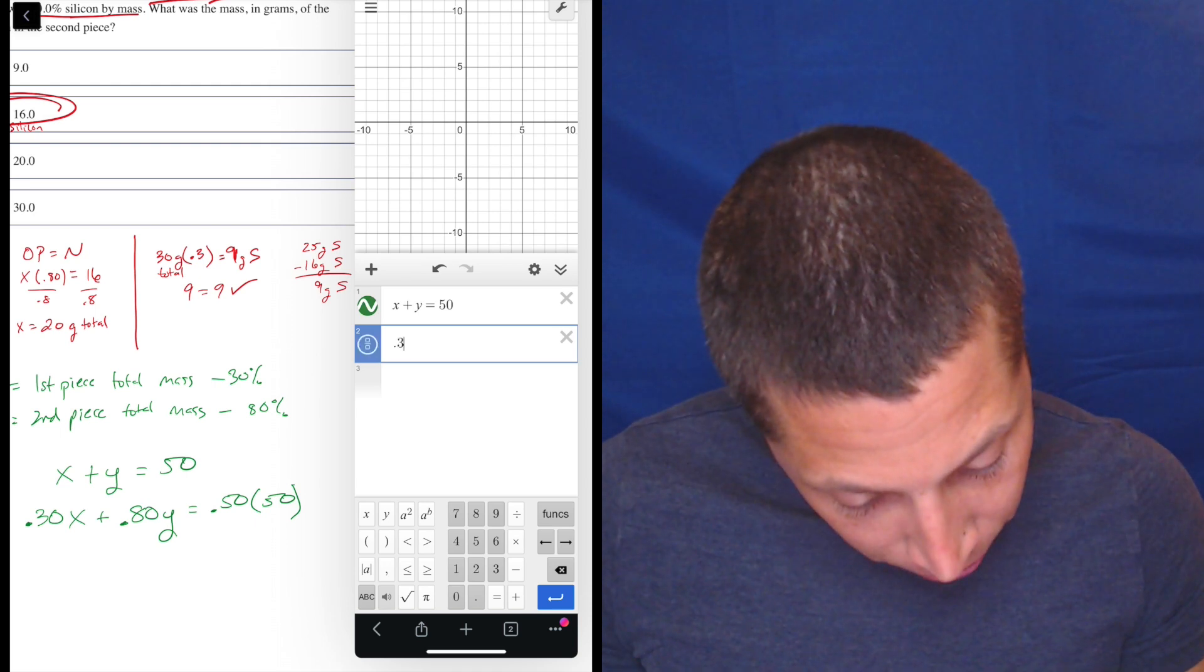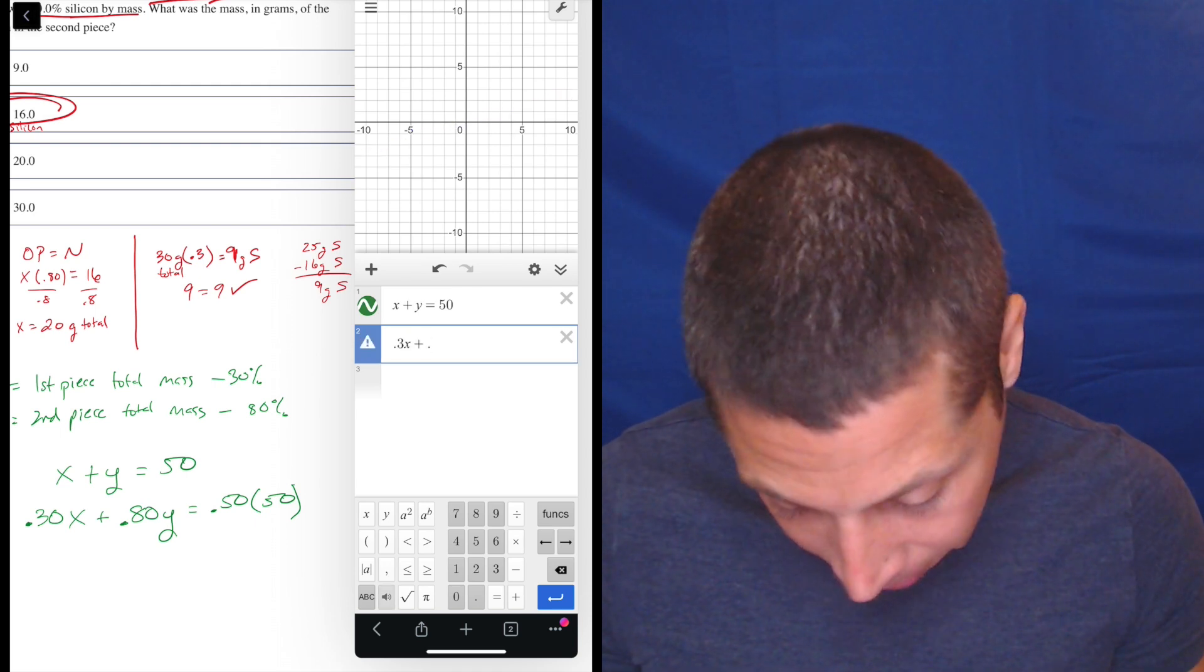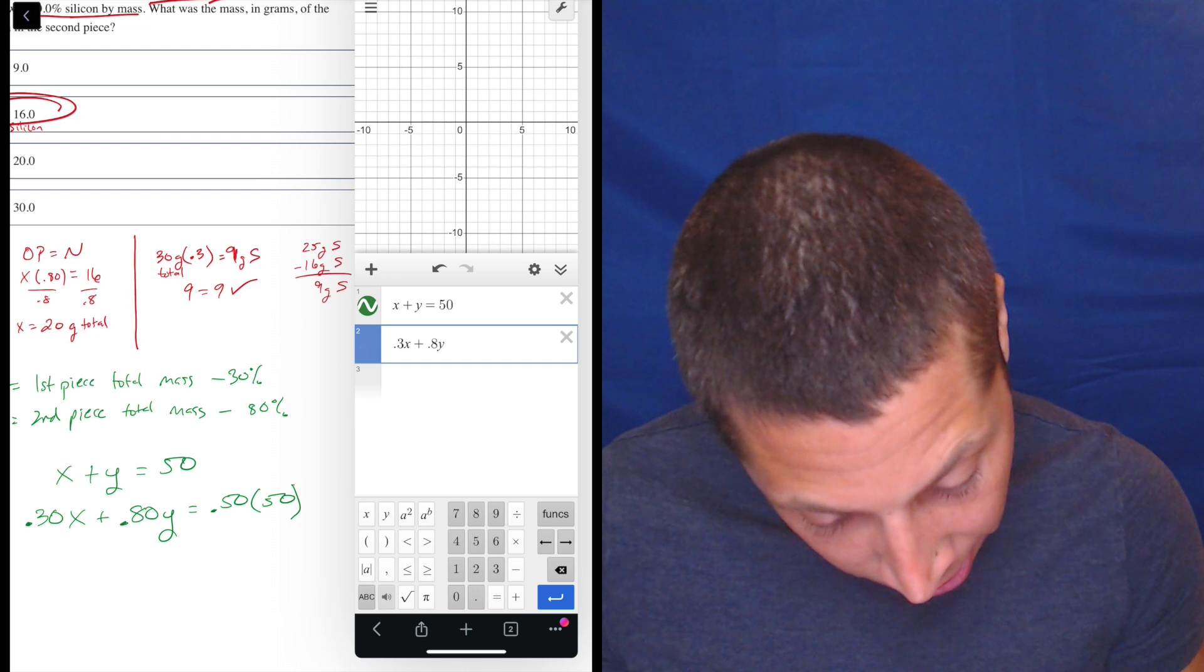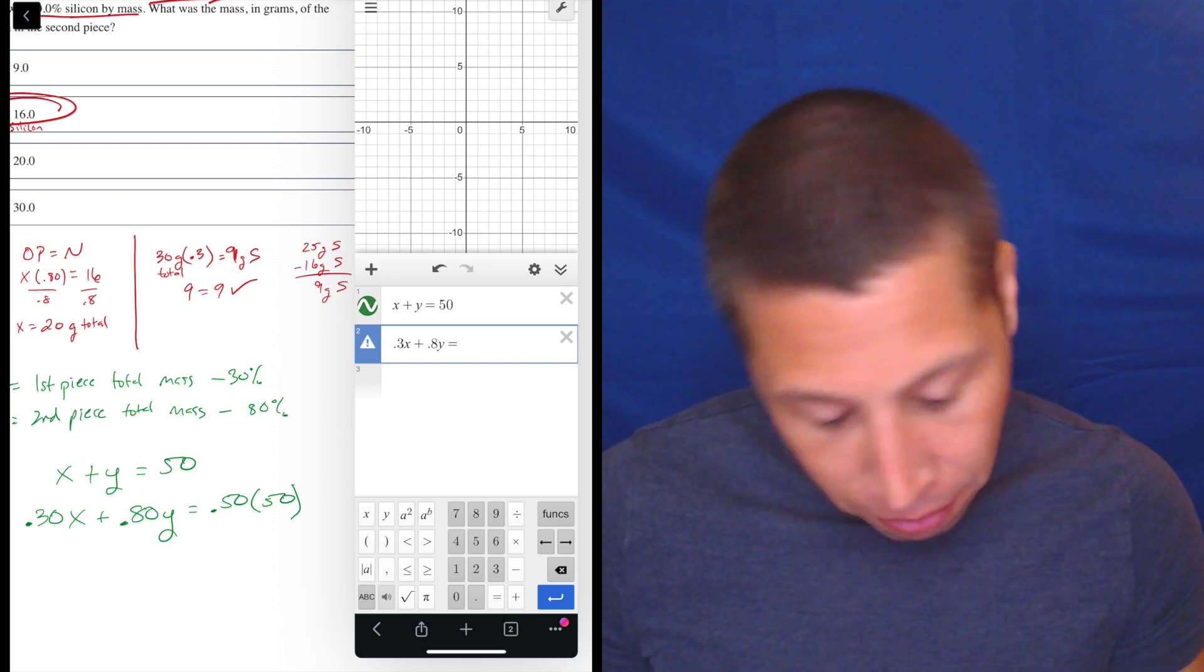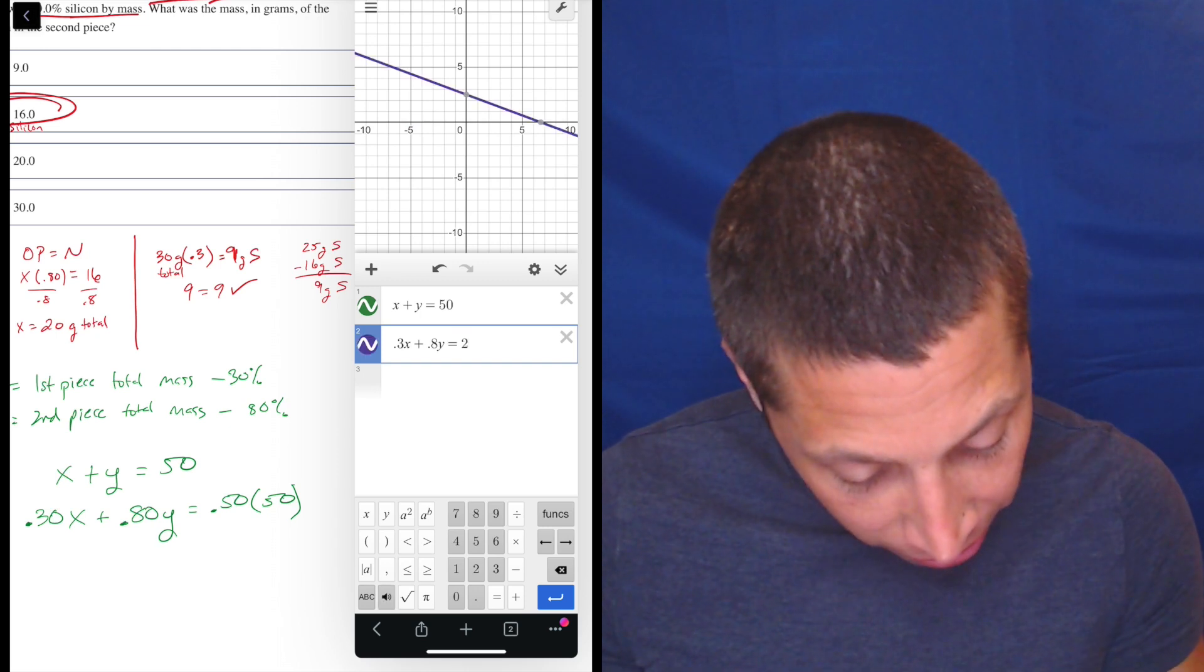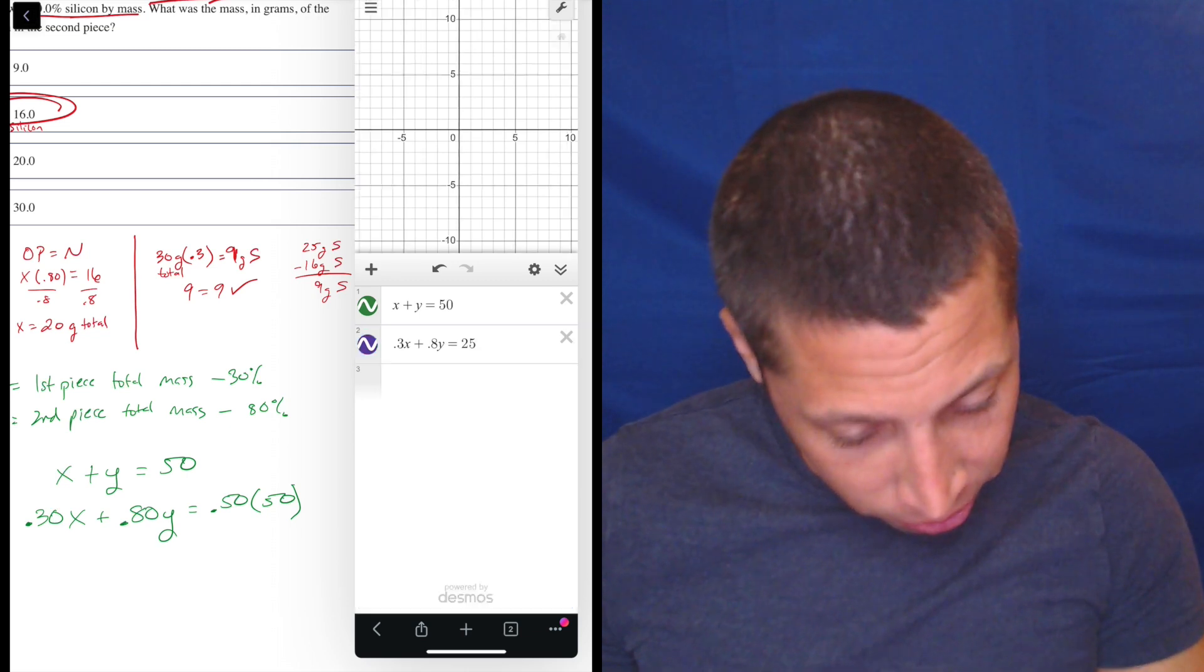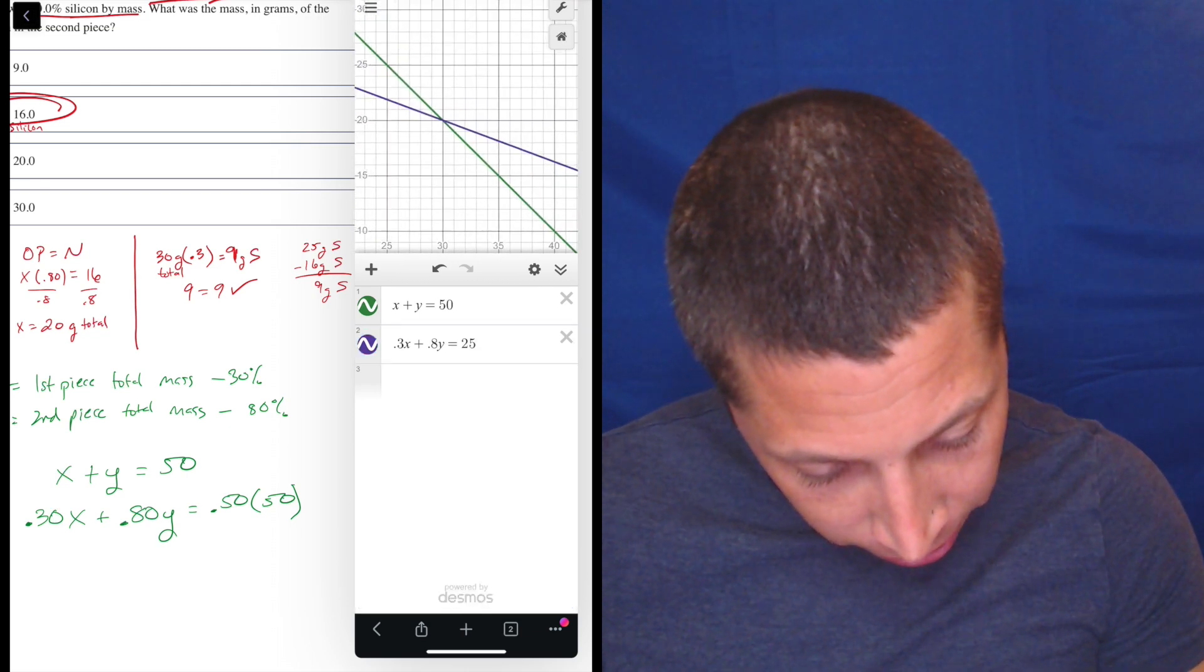So we have x plus y is equal to 50. And then we get 0.3x plus 0.8y is equal to 0.5 of 50. Let's just skip that for typing sake and say 25. So there are equations, we just got to zoom and find them. There they are.